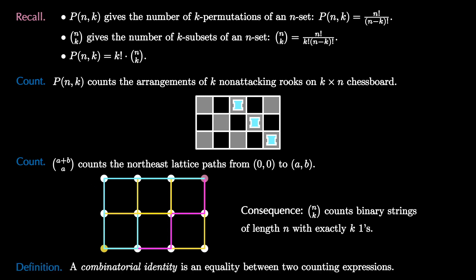In this video, we'll investigate combinatorial identities, which are equalities between two counting expressions. To encounter some combinatorial identities, we'll first investigate the array of numbers called the permutation array.